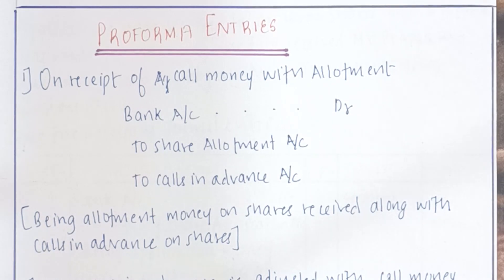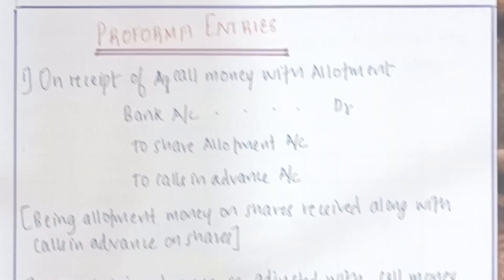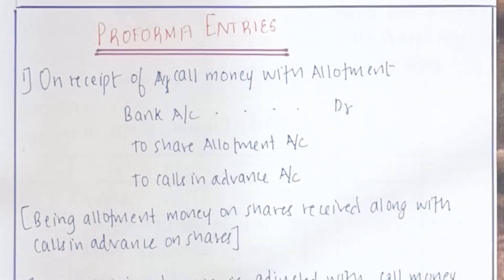So let's move on to the pro forma entries. The first case is when you receive the call money with allotment. You will write it as: Bank Account debit, to Share Allotment Account and to Calls in Advance Account. The narration being allotment money on shares received along with calls in advance on shares.